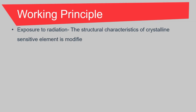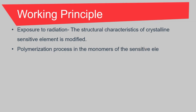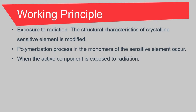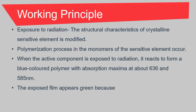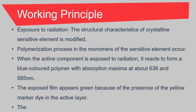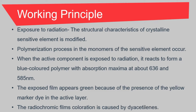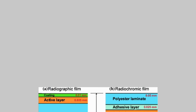Working principle. First is exposure to radiation. When the film is irradiated, the structural characteristics of the crystal sensitive element are modified. This causes a polymerization process in the monomer of the sensitive element to occur. When the active component is exposed to radiation, it reacts to form a blue-colored polymer with absorption maxima around 636 and 585 nanometers. The exposed film appears green because of the presence of a yellow marker dye in the active layer. The radiochromic film coloration is caused by diacetylene, a type of crystalline polyacetylene that is very sensitive to ionizing radiation.